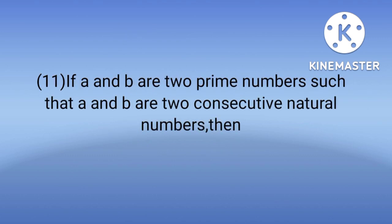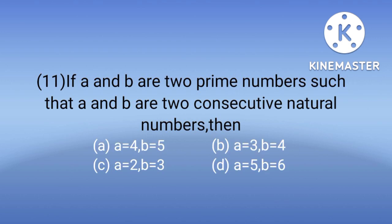Number 11: If A and B are two prime numbers such that A and B are two consecutive natural numbers, then which option gives two numbers that are both prime numbers and also consecutive natural numbers? Consecutive natural numbers means two natural numbers that come one after another. The answer is C, 2 and 3. Both 2 and 3 are prime numbers and also consecutive natural numbers.